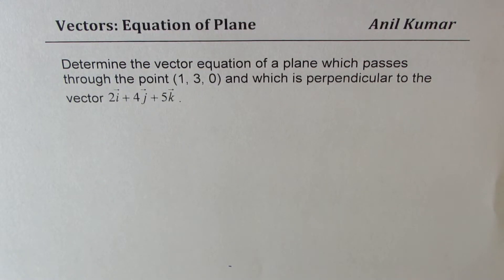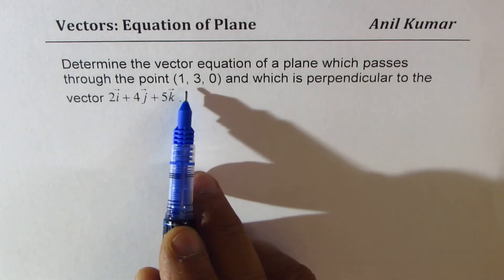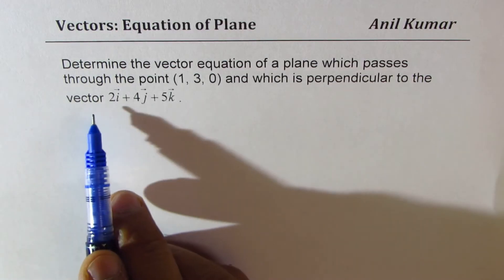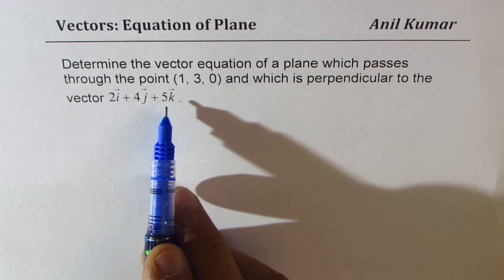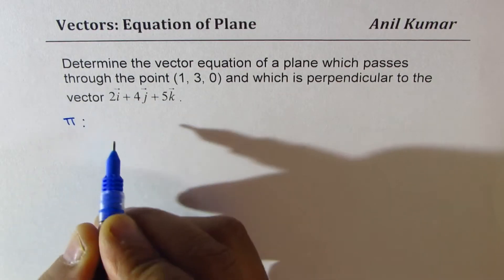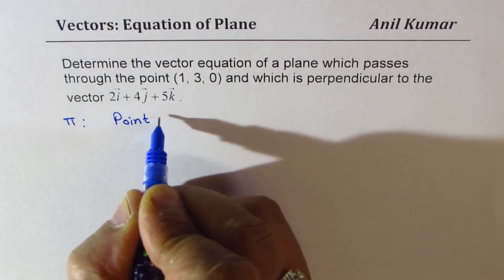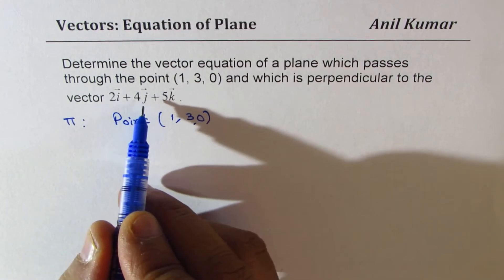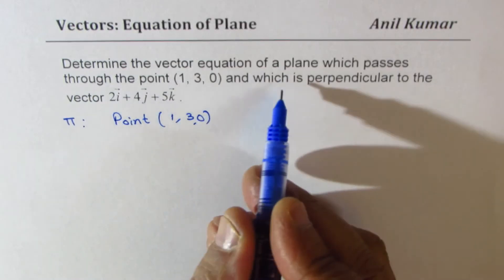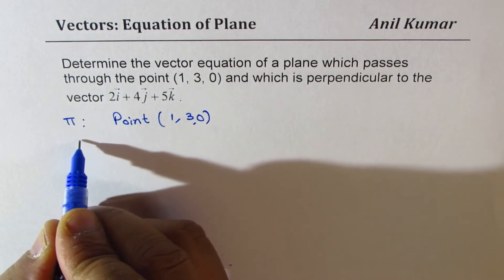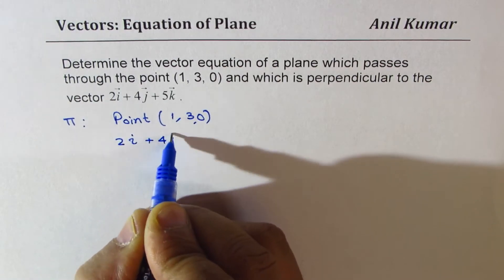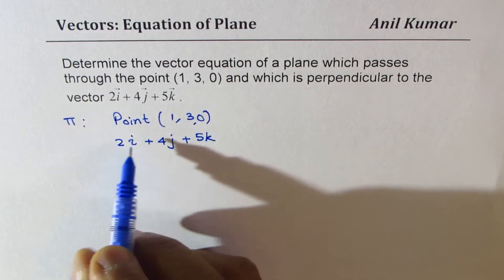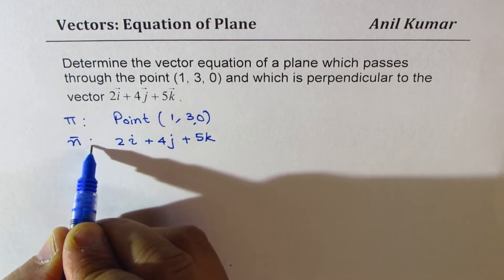I'm Anil Kumar sharing with you a question on equation of planes. The question is: determine the vector equation of a plane which passes through a given point (1, 3, 0) and which is perpendicular to the vector 2i plus 4j plus 5k. So on the plane, what we are given is a point (1, 3, 0) and a vector, which means this vector is perpendicular to the plane.